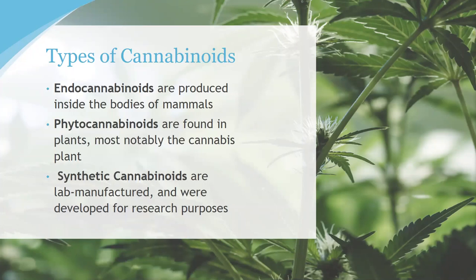Phytocannabinoids — those found in plants, phyto from the Greek meaning plant — are almost exclusively found in the cannabis plant, though it's been found now in a moss as well. It's fascinating that these phytocannabinoids in the cannabis plant also fit CB1 and CB2 receptors inside our body, therefore affecting bodily functions. Over 144 phytocannabinoids have been isolated in the plant so far. The most commonly known are THC and CBD, and today we'll also discuss properties of other lesser-known phytocannabinoids.